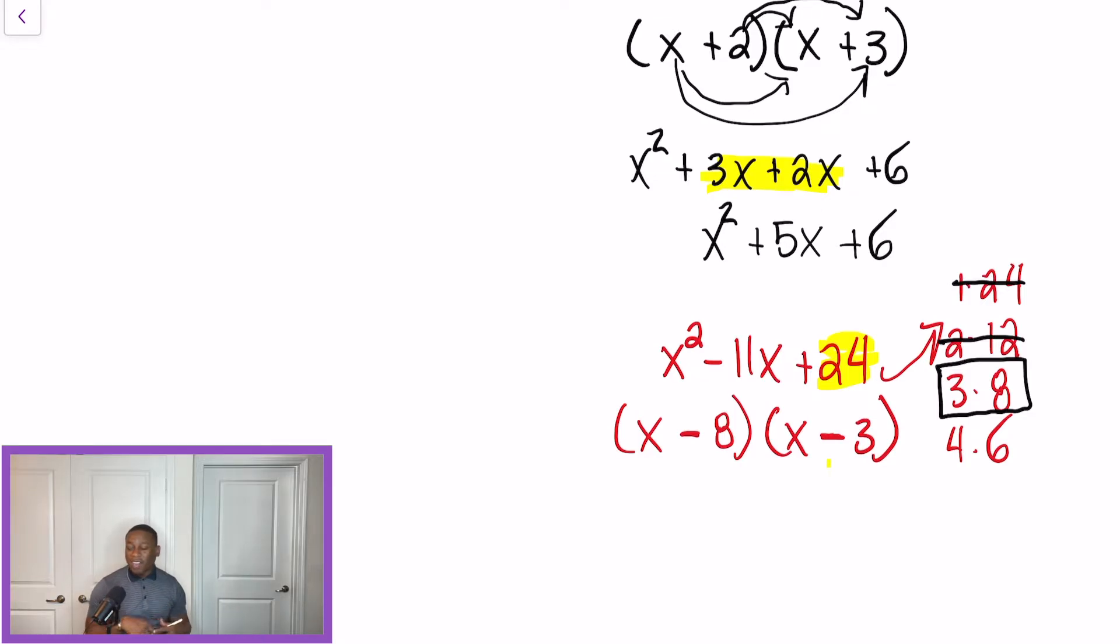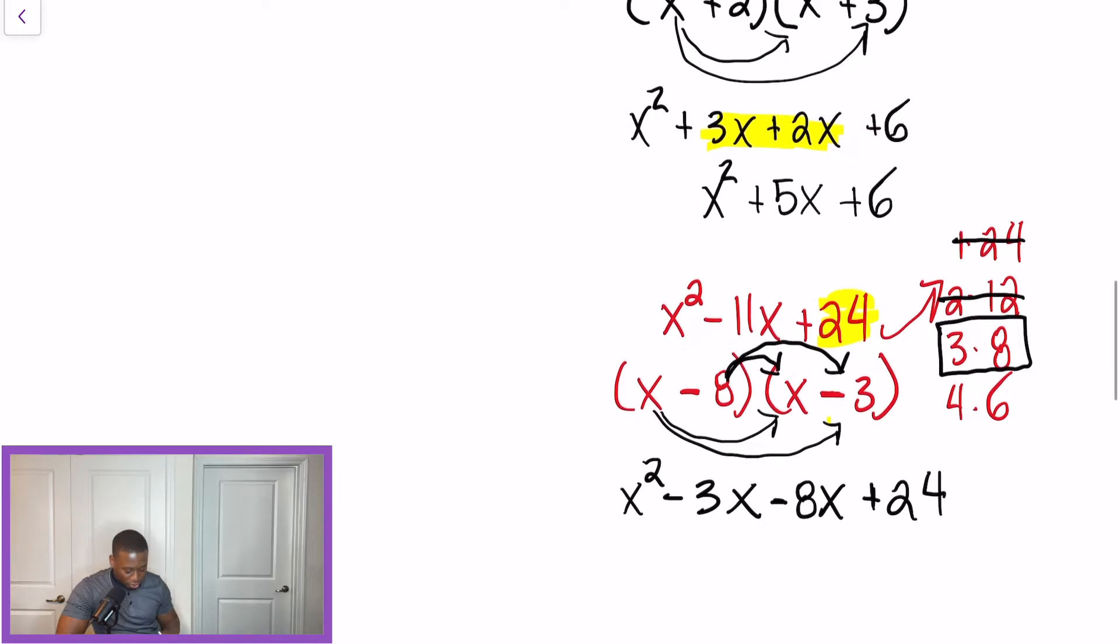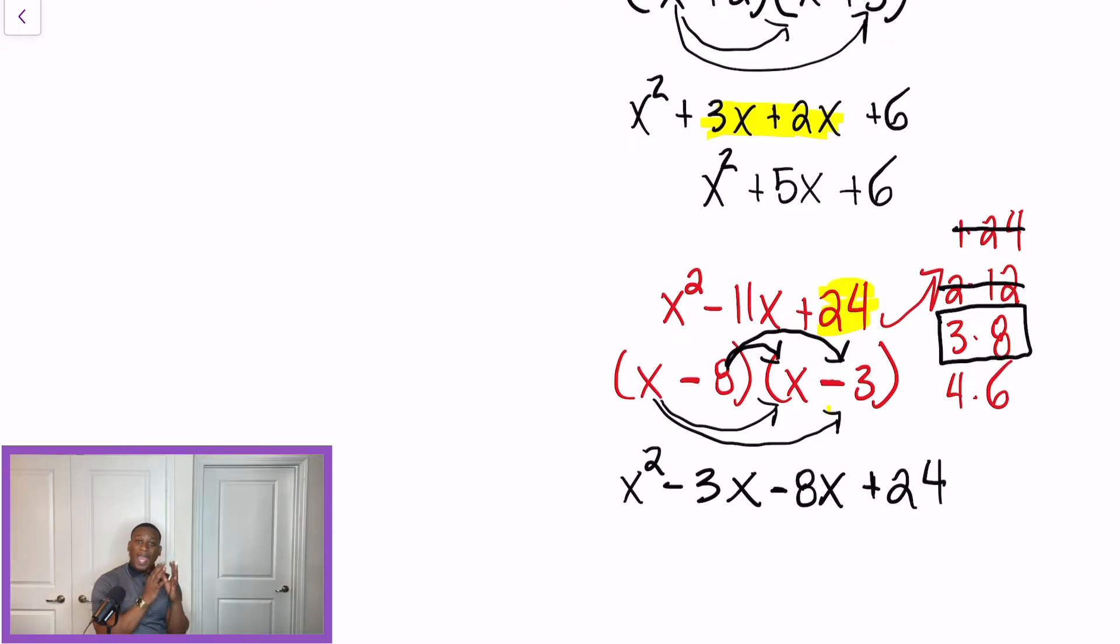And we're going to multiply this back right now just to double-check our answer. So, when we multiply our x's, we're going to get x² - 3x. And then when we take our negative 8, we're going to have negative 8 times x, which gives us negative 8x. And then negative 8 times negative 3, which gives us positive 24. And if you guys remember from our previous videos on how to add integers, when two numbers have the same sign, we just add them and keep the sign. So, when I combine negative 3 and negative 8, that's going to give me negative 11x. And once we combine those like terms, we could double-check and say that, hey, this is the right answer.